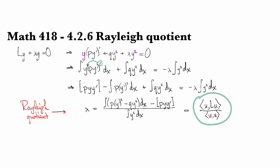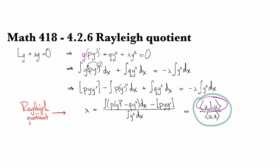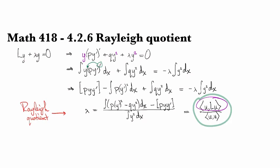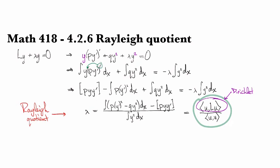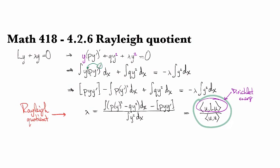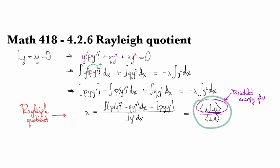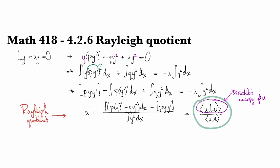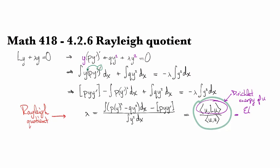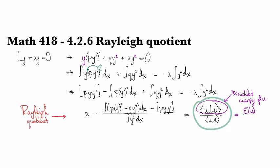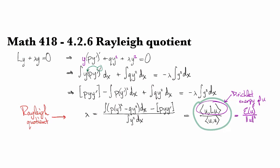Also, this is referred to as an energy method because this term right here is what's known as the Dirichlet energy of u. And so, this expression that we obtained here at the end, this is the energy of u with respect to the form L. And then on the bottom we have the L2 norm of u.